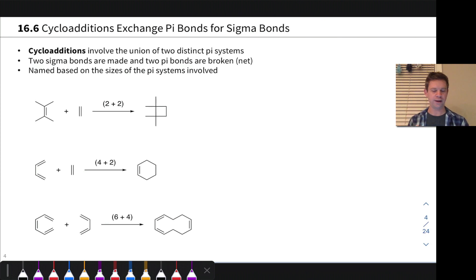So two new sigma bonds are created in one go and two pi bonds in the two distinct pi systems are broken. These are named based on the sizes of the pi systems involved and use parentheses or in older or less careful literature, you'll see square brackets used to indicate the sizes of the pi systems. This is how we name them.